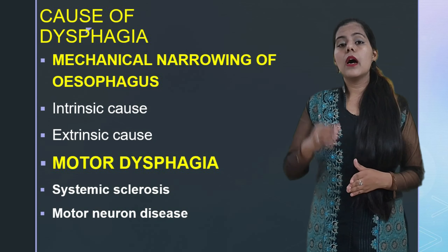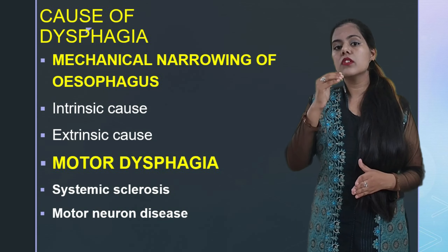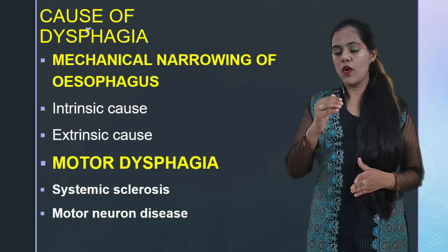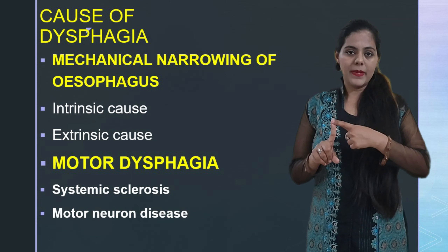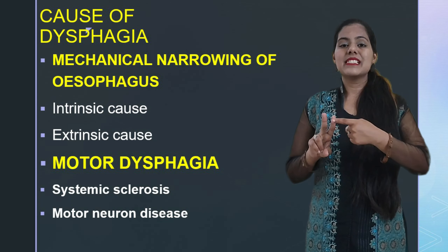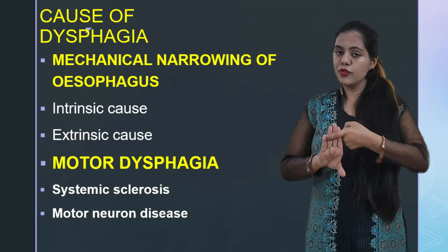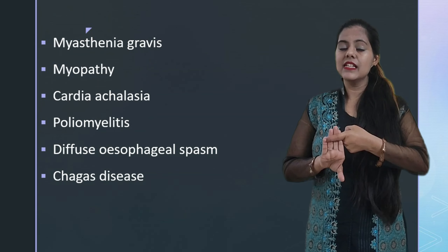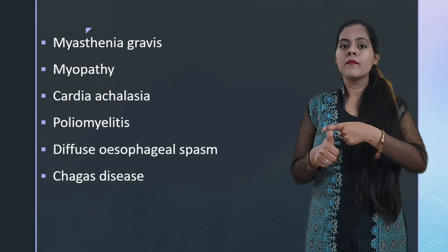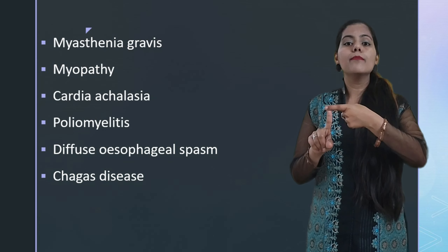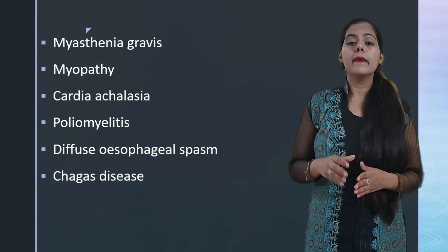Now the motor dysphagia causes. These include myopathy, myasthenia gravis, systemic sclerosis, motor neuron disease, diffuse oesophageal spasm, and poliomyelitis. That covers all the causes of dysphagia.